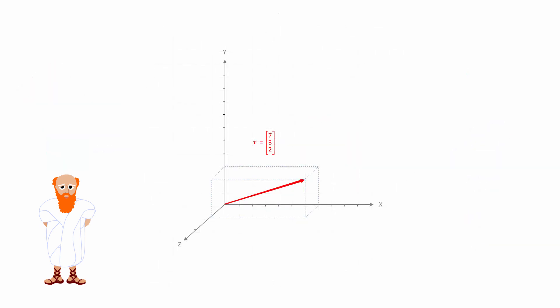To calculate the magnitude of a three-dimensional vector, a similar approach can be used. Notice that this is a right-angled triangle and the vector is the hypotenuse.